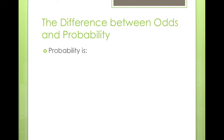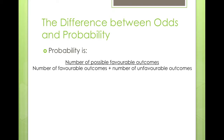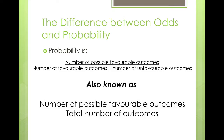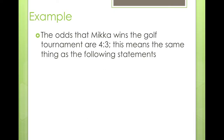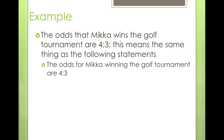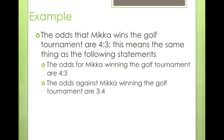The difference between odds and probability: probability is the number of favorable outcomes over the favorable outcomes plus unfavorable — in other words, favorable outcomes over the total number of outcomes. Odds is not like this; odds is favorable over unfavorable, or unfavorable over favorable — we don't care about the total number of outcomes. For example, the odds that Mika wins the golf tournament are four to three, so the odds for Mika winning are four to three, and the odds against him winning are three to four.